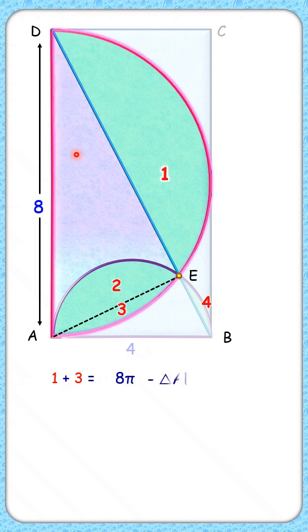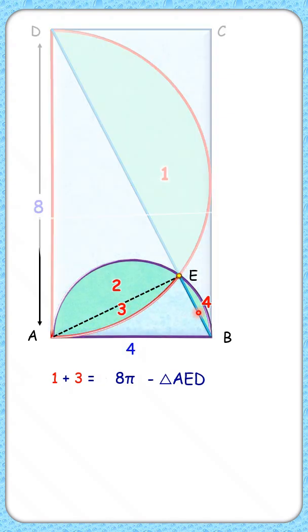Same way for area two and four, let's concentrate on this small semicircle. So here area of this semicircle is 2π, and from this if we subtract this pink triangle, we'll get area two plus four.